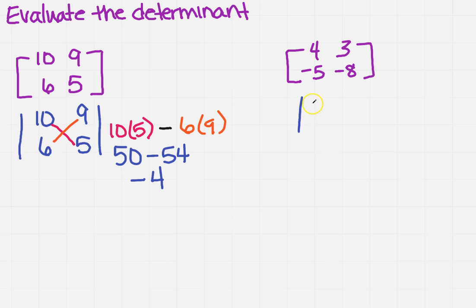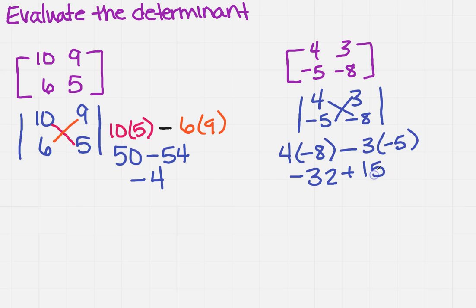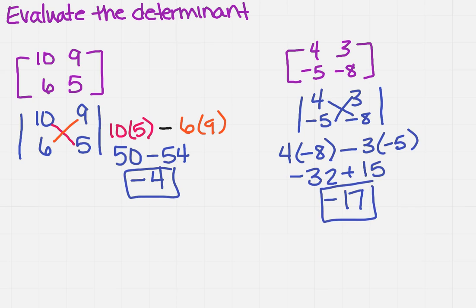I'm going to do the same thing over here. I'm going to have 4, negative 5, 3, negative 8. So I do to the right first: 4 times negative 8, minus, and I come back to the left, 3 times minus 5. So I'm going to get minus 32 plus 15, which gives me minus 17.